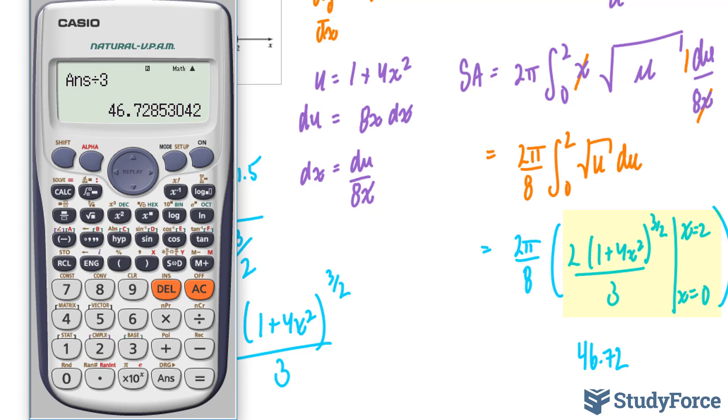Next, we'll find out what this is equal to when x equals 0. 2 bracket 1 plus, this part becomes 0, to the power of 1.5, divided by 3, 2 over 3.